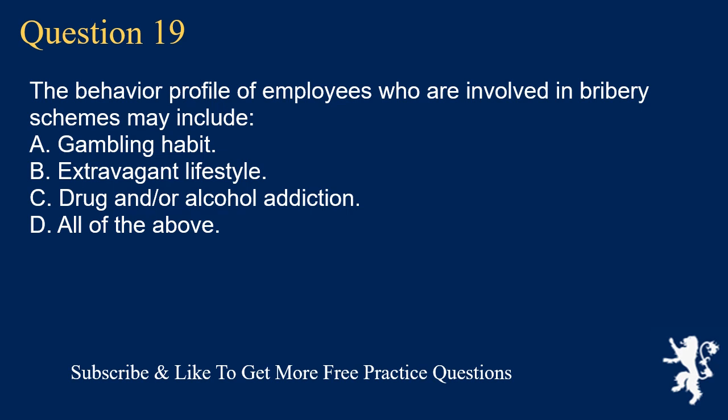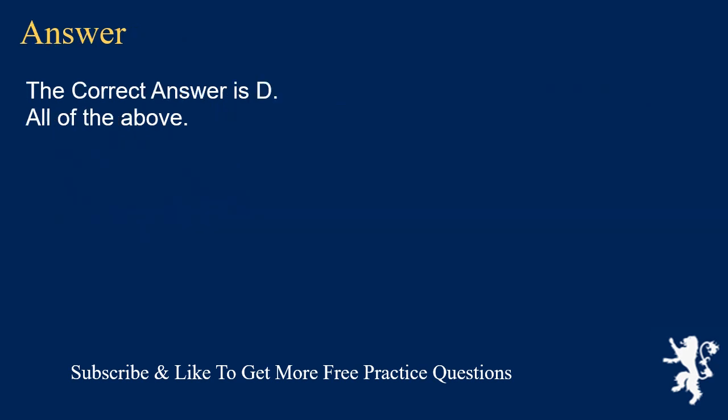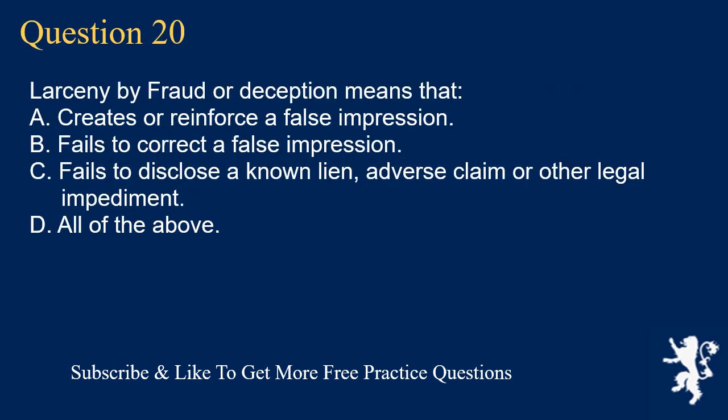Question 19: The behavior profile of employees who are involved in bribery schemes may include: A. Gambling habit. B. Extravagant lifestyle. C. Drug and/or alcohol addiction. D. All of the above. The correct answer is D. All of the above.